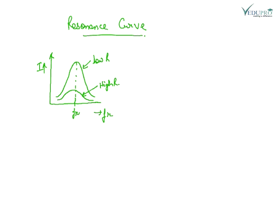The resonance curve is this. For low R, the value of resistance, the curve will follow this, and for high resistance, the curve is this. This is FR maximum at resonant frequency. The value of current will be maximum at resonant frequency.